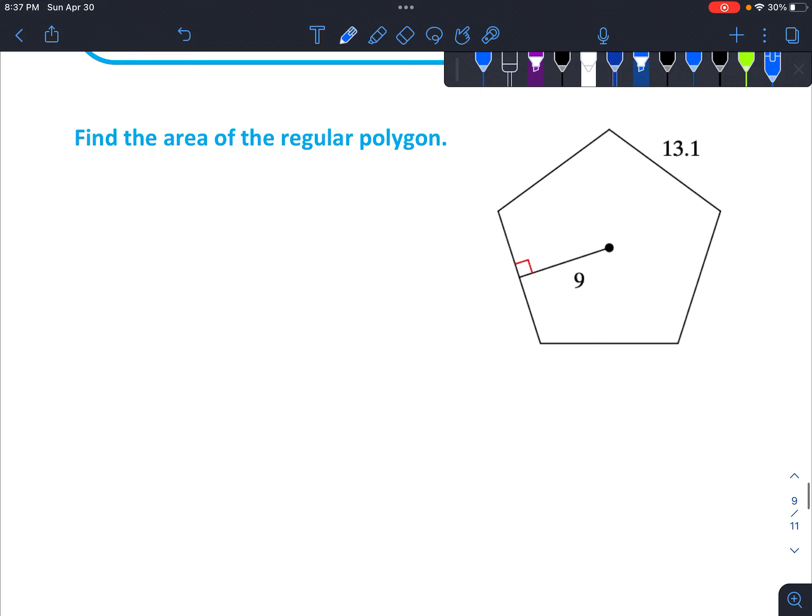Okay. Let's find the area of this regular polygon. Let's identify our parts. So S equals thirteen point one. N is one, two, three.